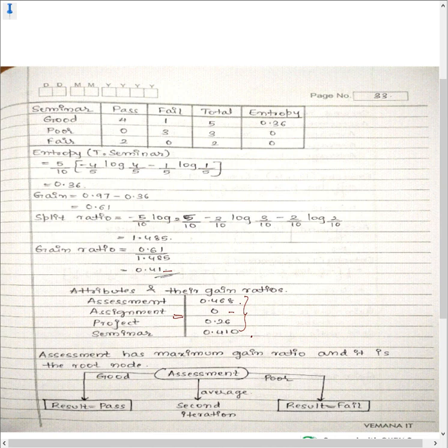Listing out all gain ratios: assessment is 0.468, assignment is 0, project is 0.25, and seminar is 0.410. Assessment has the maximum gain ratio, so assessment is chosen as the root node — it is the best splitting point. We now construct the decision tree.